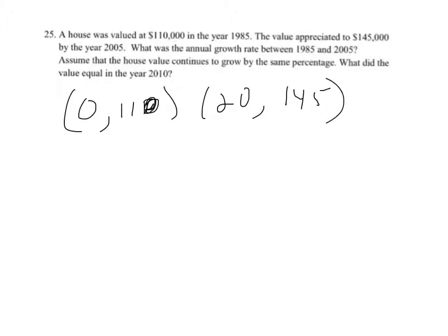So we can set up our exponential growth equation. We know that 145 equals the initial value times some growth rate, or some base, to the 20th power. And to solve that, we divide both sides by 110. I'm getting 1.3182 equals B to the 20th.